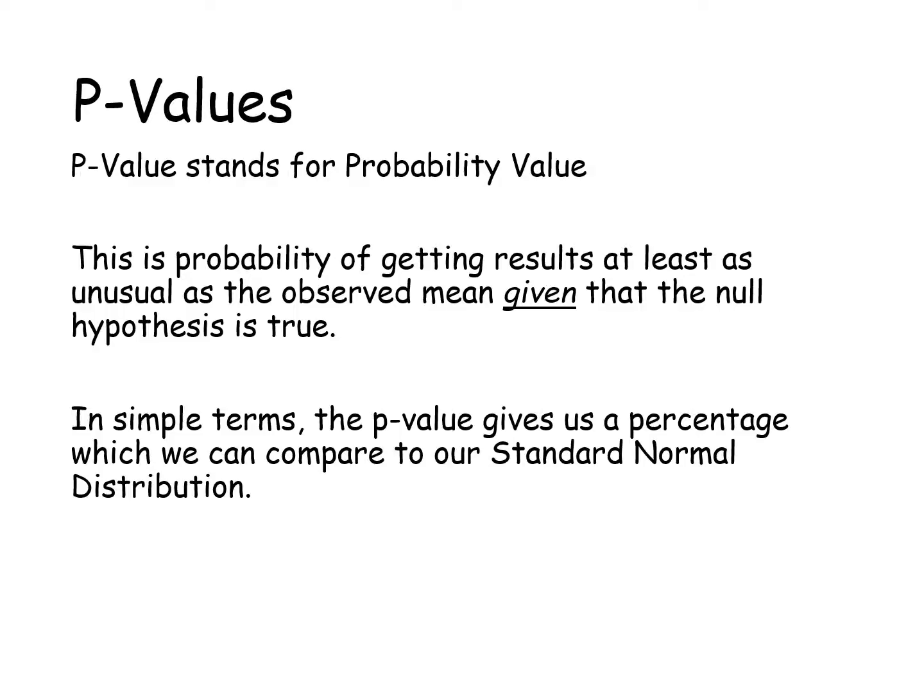P-value stands for Probability Value. This is the probability of getting results at least as unusual as the observed mean, given that the null hypothesis is true.